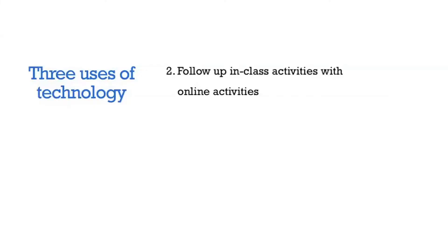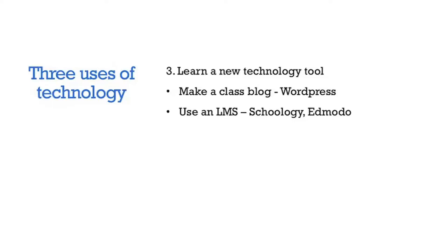A second use is to follow up in-class activities with online activities. This could include doing independent research on the internet, or assigning students a video to watch on YouTube. So the students use the technology outside of the classroom, not in the classroom. A third option is to learn a new technology tool — for example, a class blog. There are many possible uses: you could post follow-up messages to students after class, it could be a place to access links to homework assignments, and it's a great place for students to post their own writing. Peer editing can be very easy to organize on a class blog.